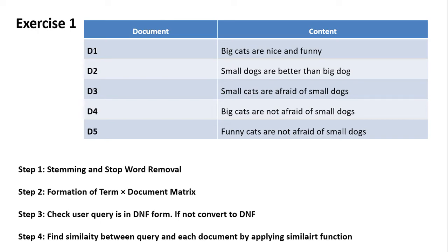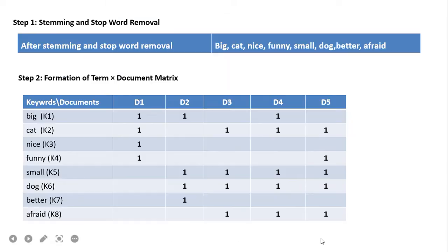Five documents are given, d1 to d5, and these are the contents of the documents. This file has a completely flat structure. These are the four steps we need to cover: first, stemming and stopword removal; second, formation of the term-document matrix; third, check whether the query is in DNF form or not, and if not, convert to DNF; and fourth, find the similarity between the query and each document by applying the similarity function.